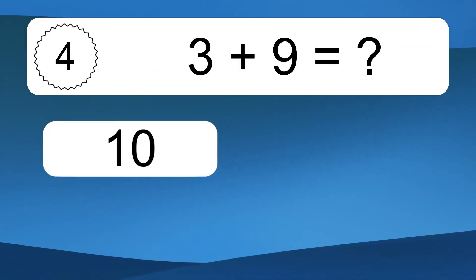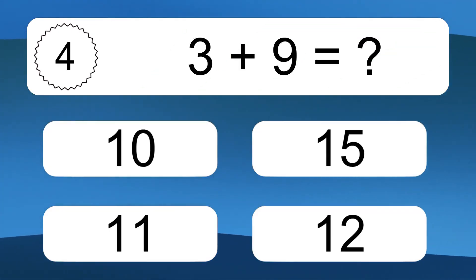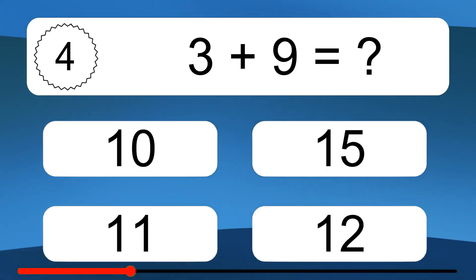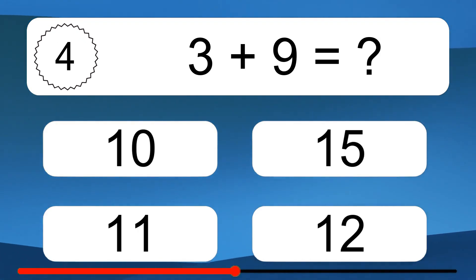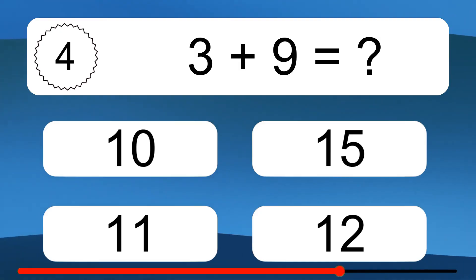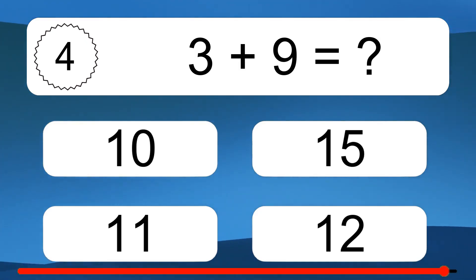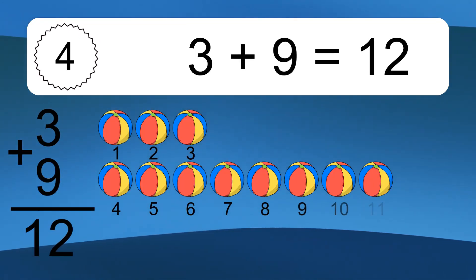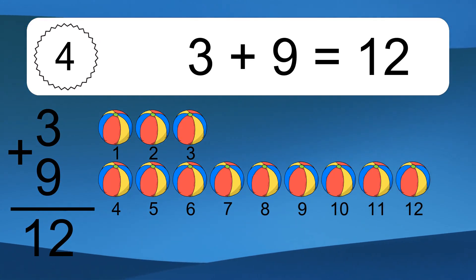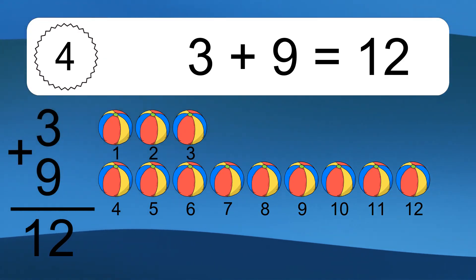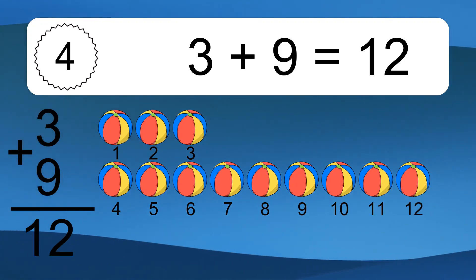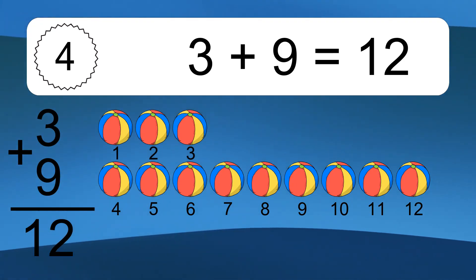3 plus 9 equals what? 3 plus 9 equals 12. Let's count it: 1, 2, 3, 4, 5, 6, 7, 8, 9, 10, 11, 12.